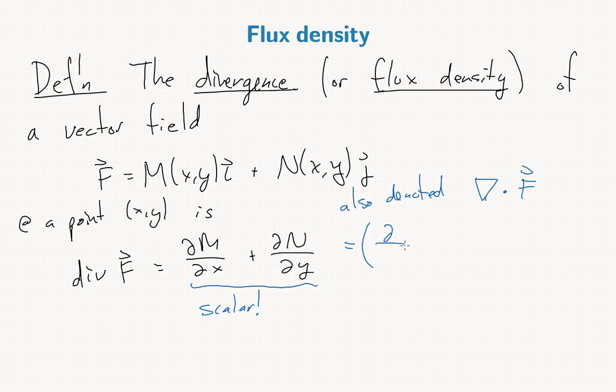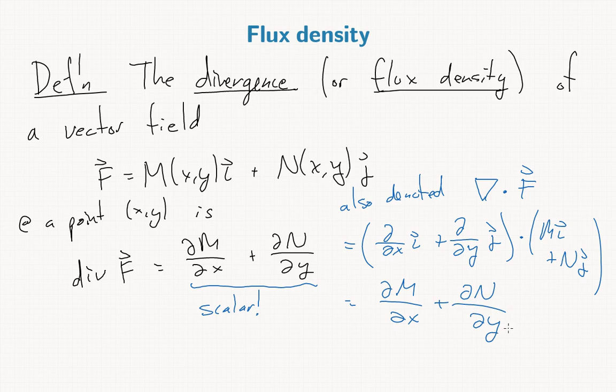This is also denoted nabla dot f, because that's—again it's a slight abuse of notation, but if nabla is del by del x i plus del by del y j, so if we dot that with Mi plus Nj, this becomes del M by del x, and then these two go together, so plus del N by del y.